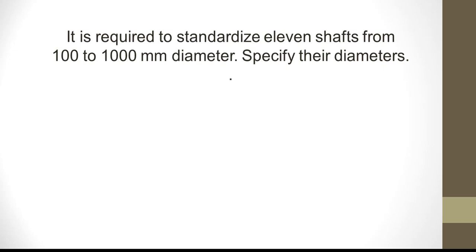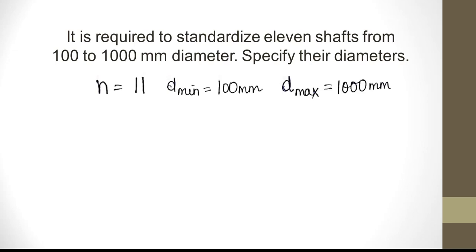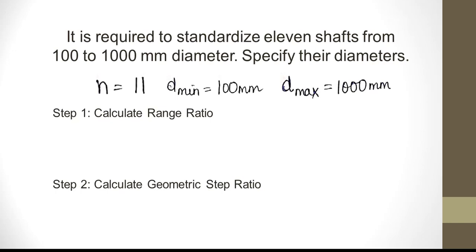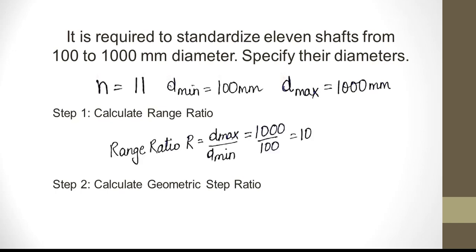It is required to standardize 11 shafts from 100 to 1000 mm diameter and specify the diameters. N is 11 — 11 shafts have to be standardized, and the diameters have to be specified. The minimum diameter is 100 mm and the maximum diameter is 1000 mm. We will first calculate the range ratio, which is D_max upon D_min.